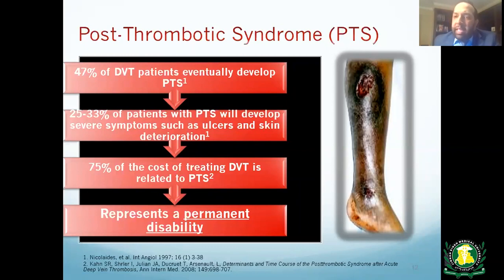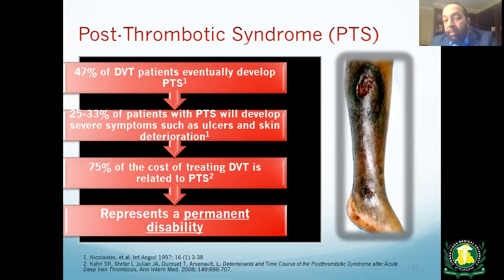We know that 47% of DVT patients will eventually develop post-thrombotic syndrome, and 25 to 33% of those will develop severe symptoms such as ulcers and skin deterioration. Furthermore, 75% of the cost of treating DVT is related to post-thrombotic syndrome. Once a blood clot has been present for a long time, it scars and fibroses the vein — at that point you can try to balloon it, stent it, or attempt salvage, but it's largely preventable if treated correctly initially.